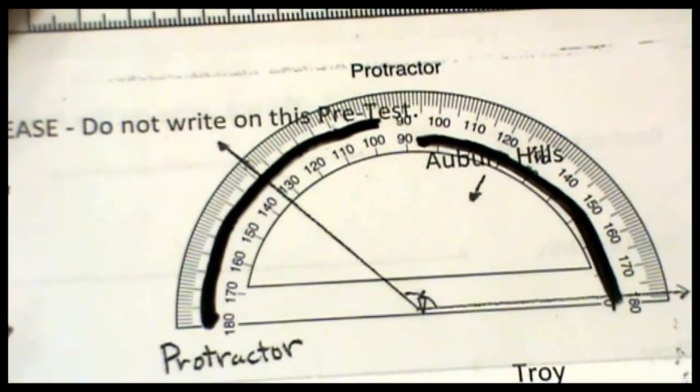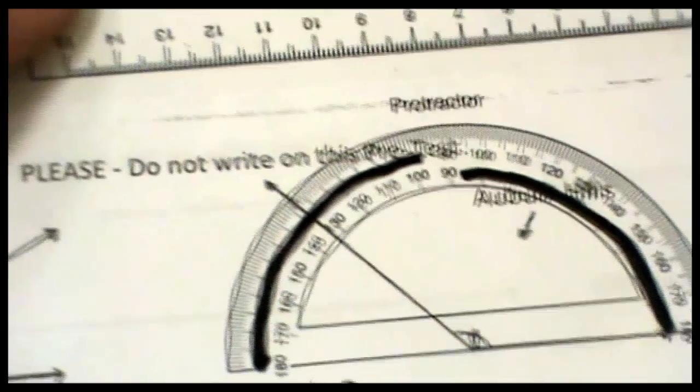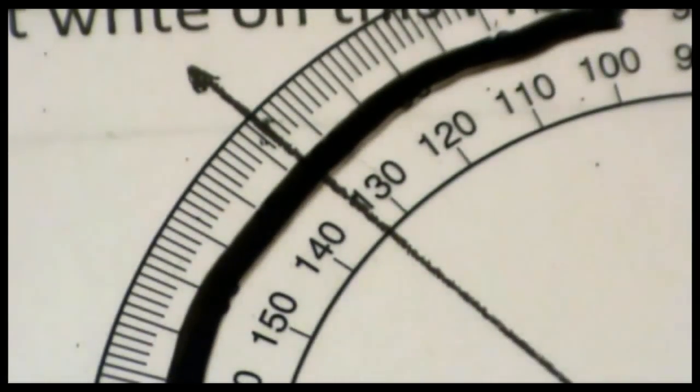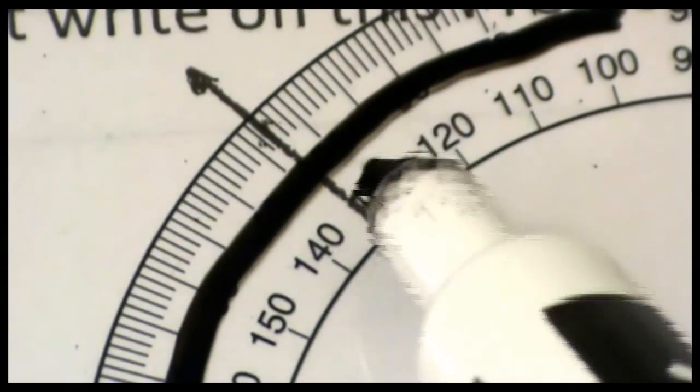Obtuse angles can be a little bit more difficult because they're greater than 90 degrees, and you have to make sure to use the numbers over 90. As I zoom in to see the angle here, you can see it's between 130 and 140.